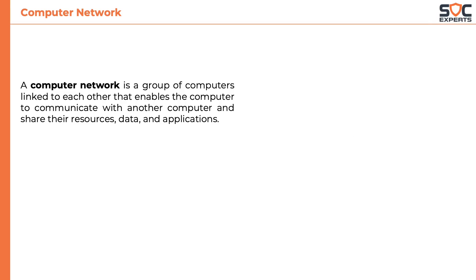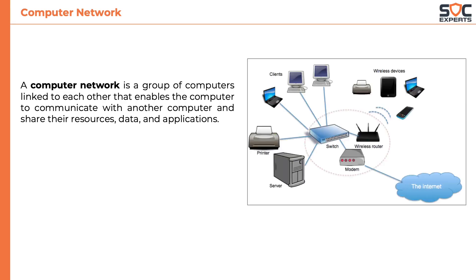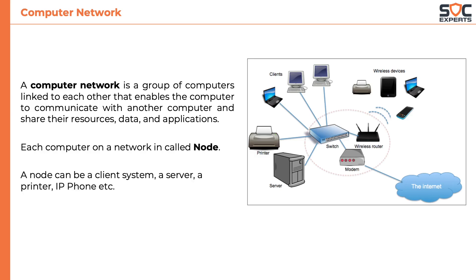A computer network is a group of computers linked to each other. This enables the computers to communicate with one another and share their resources, data, and applications. Each computer on a network is called a node. A node can be a client system, a server, a printer, or an IP phone.